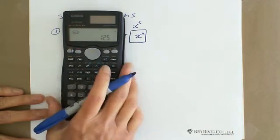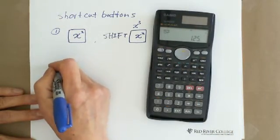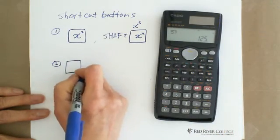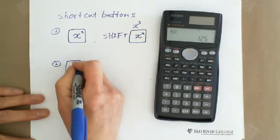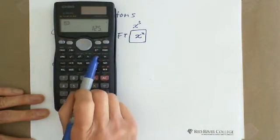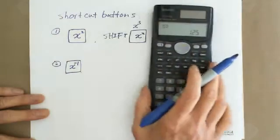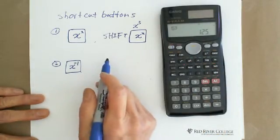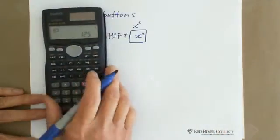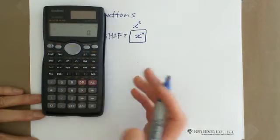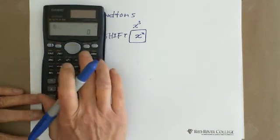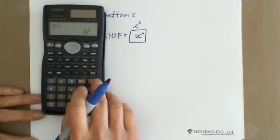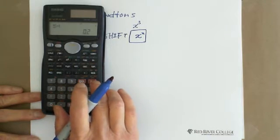The second button is the X⁻¹ button — that means reciprocal. This button is really useful. For example, you can find 1/5 by entering 5 and hitting this button.